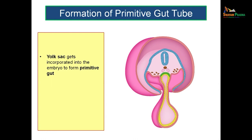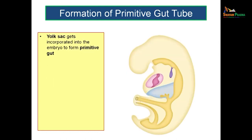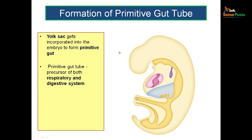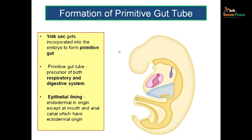As the amniotic cavity enlarges, it will take off some of the yolk sac into the embryonic disc, and this part of the yolk sac which is getting incorporated into the embryonic disc is called the primitive gut. So the formation of primitive gut is by the absorption of a part of the yolk sac into the embryonic disc. The primitive gut gives rise to the gut tubes as well as to the respiratory system, so the primitive gut is a precursor of both the respiratory and digestive system.